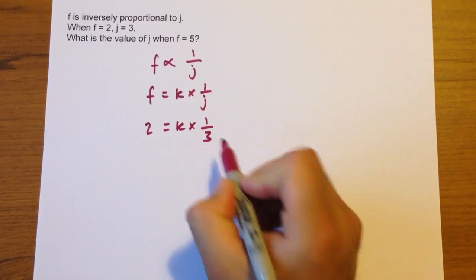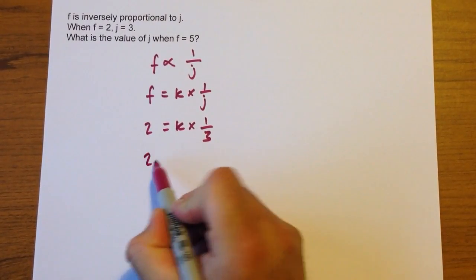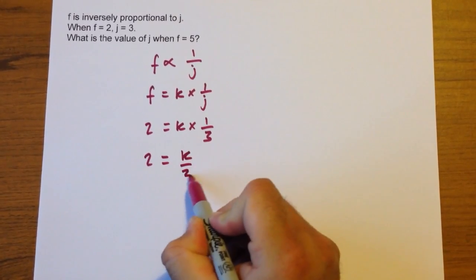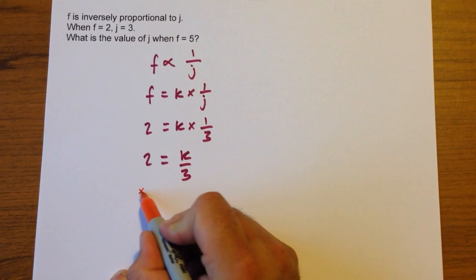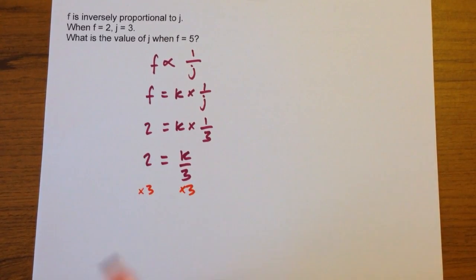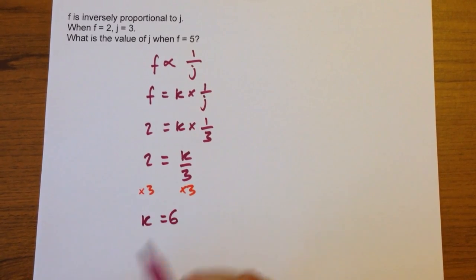Times 1 over 3. Now it probably makes more sense to write this as 2 equals k over 3, because now you can see to get rid of the divide by 3 you multiply both sides by 3. So that's going to tell you that k equals 6.